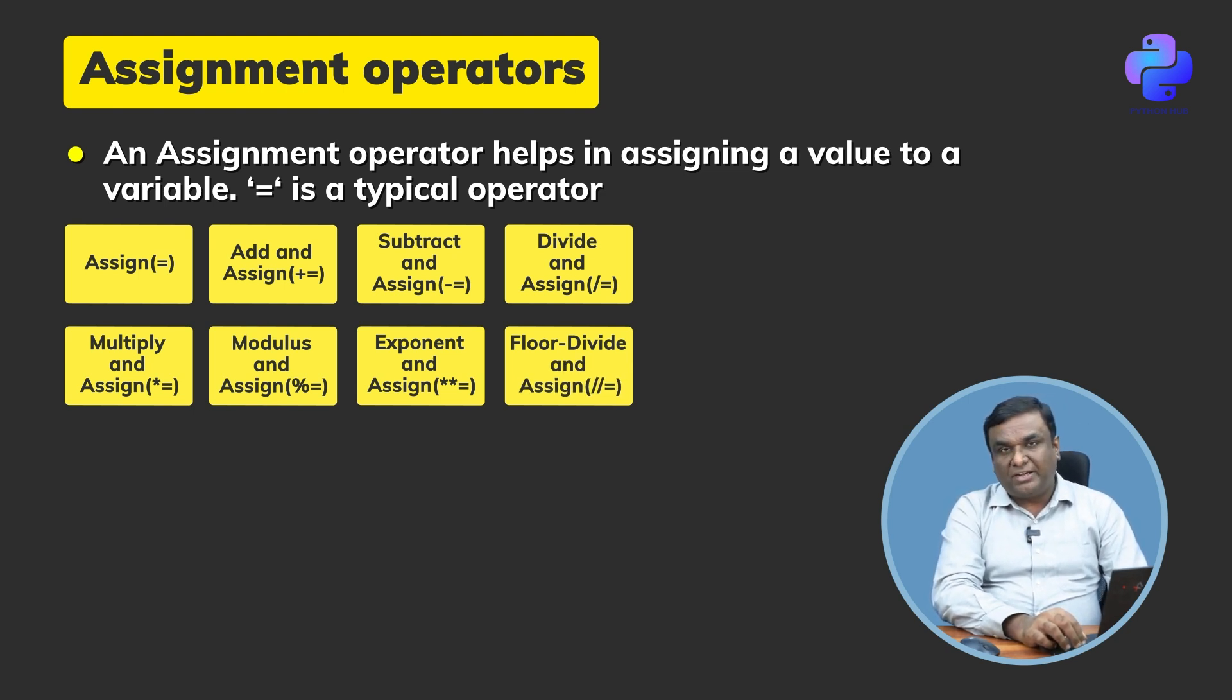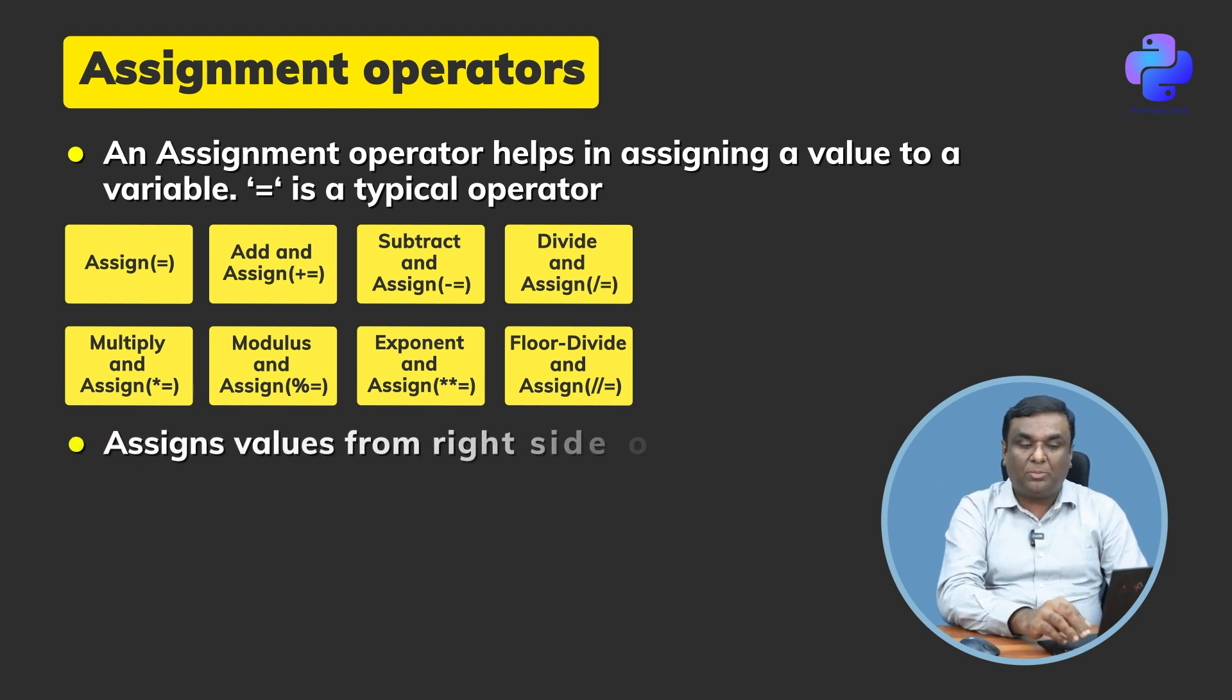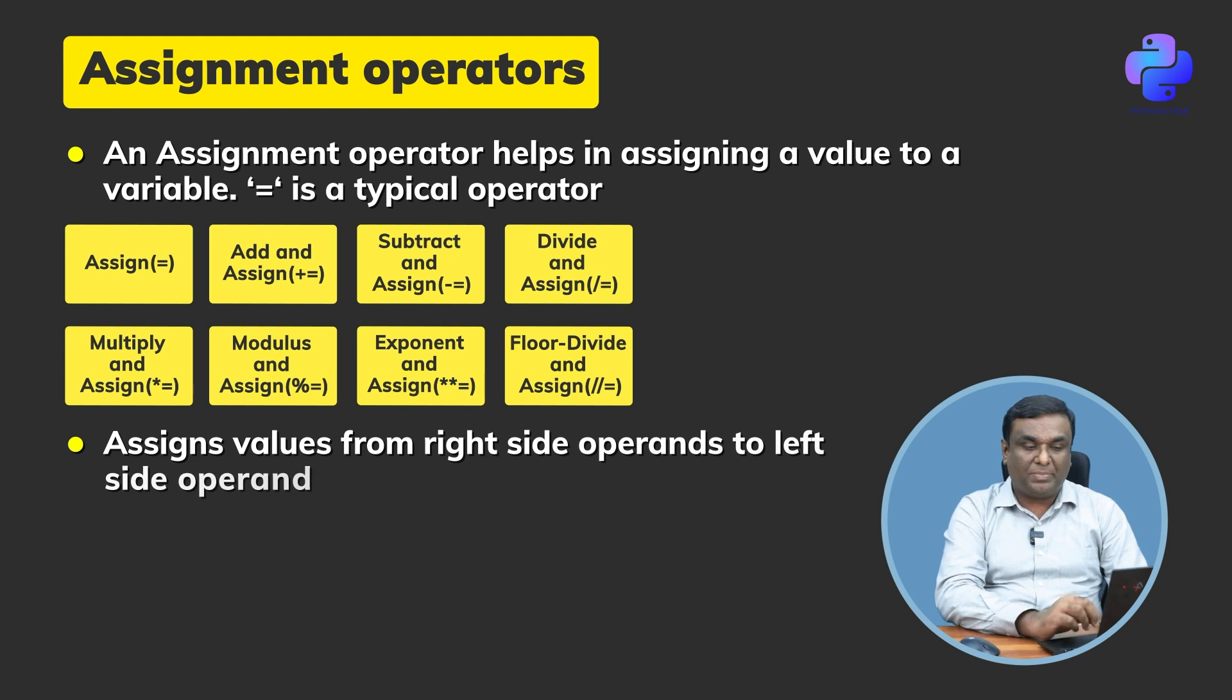To summarize, an assignment operator helps assign a value to a variable. Equal to is a typical operator. It assigns values from the right side operands to the left side operands.